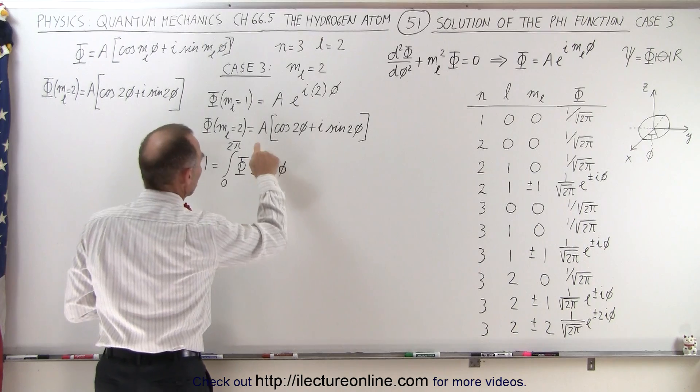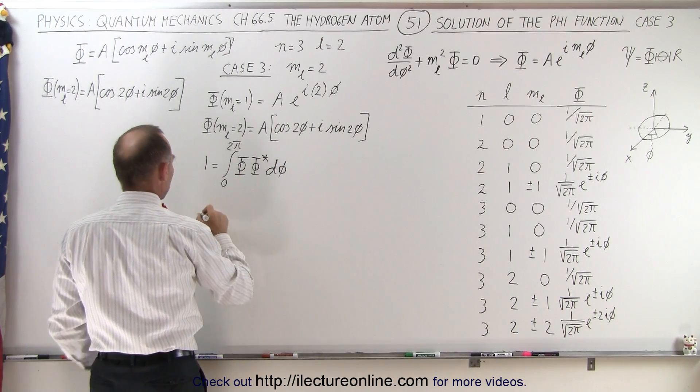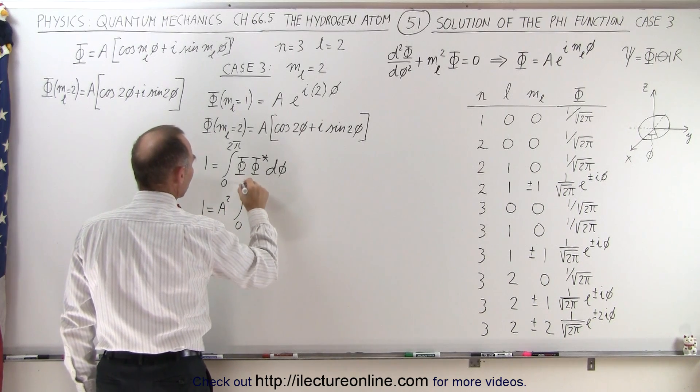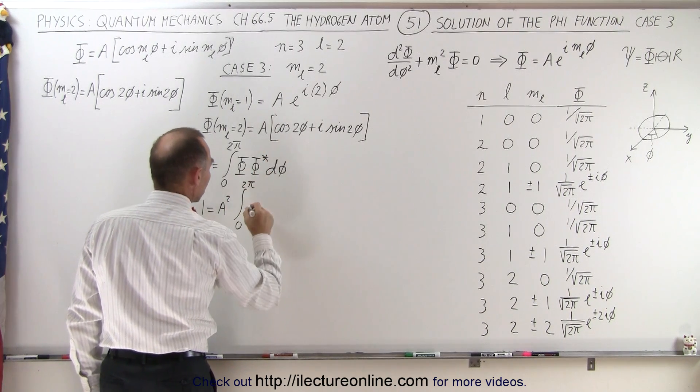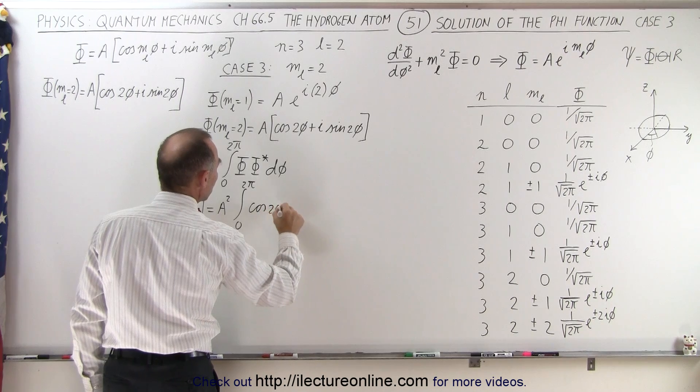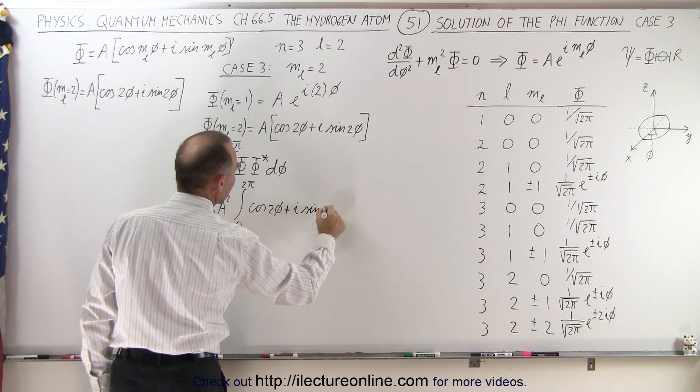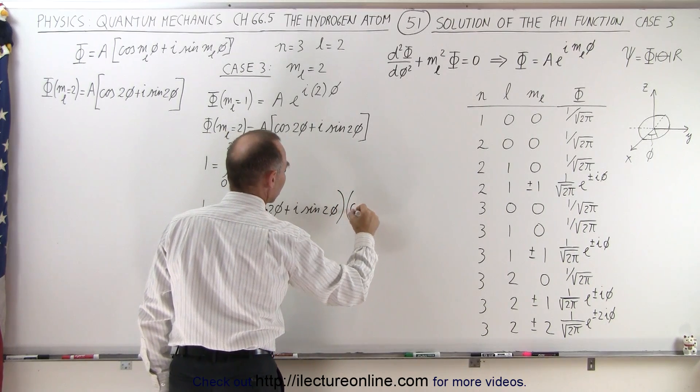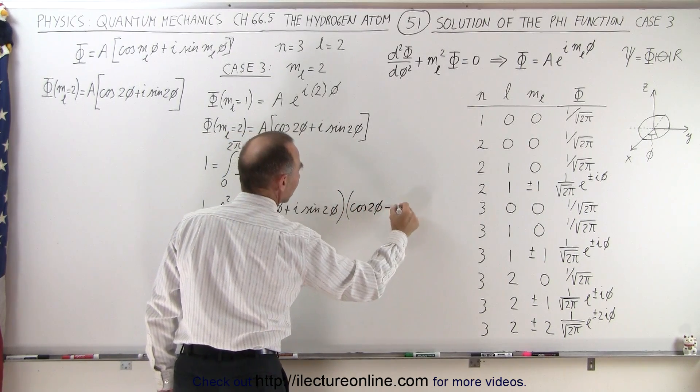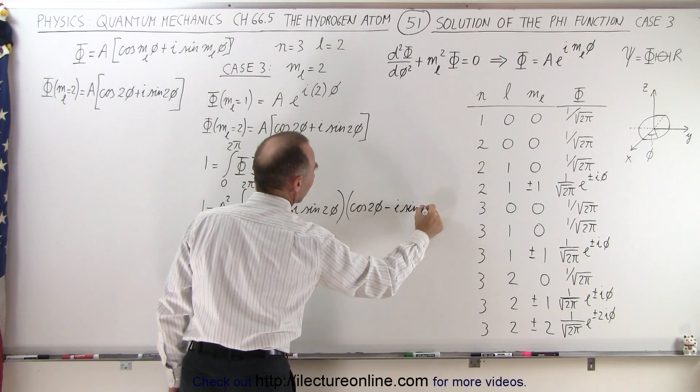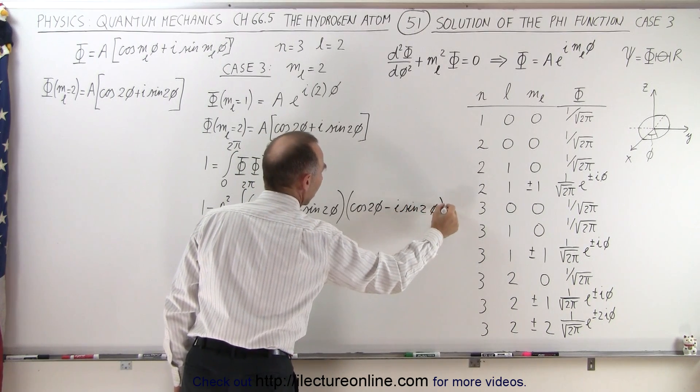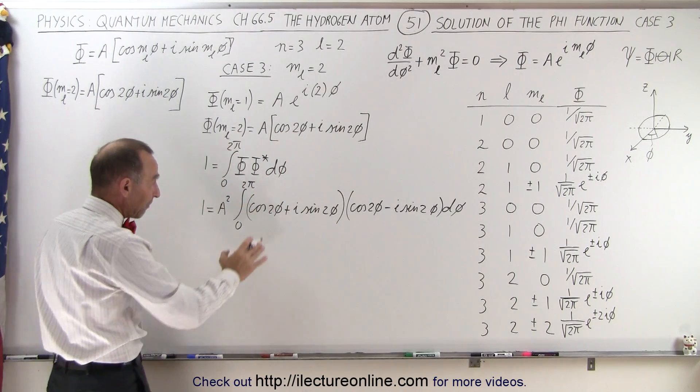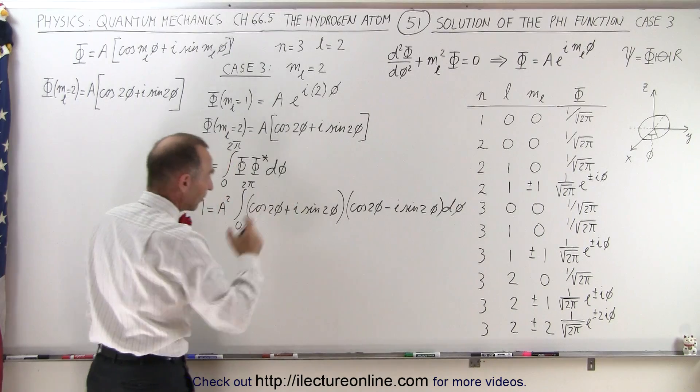So let's go ahead and do that. When we square this number, we get a squared, so we have 1 is equal to a squared, and then we integrate from 0 to 2π, the cosine of 2φ plus i times the sine of 2φ, multiply that times the complex conjugate of the cosine of 2φ minus i times the sine of 2φ. And we still need a dφ in there. Now, does that make a difference now that we have a 2 in there instead of a 1? Well, let's take a look and see.